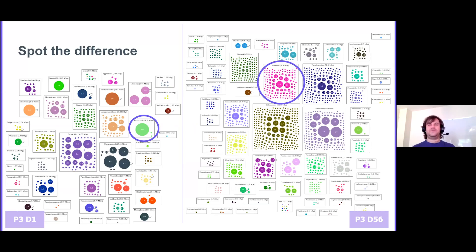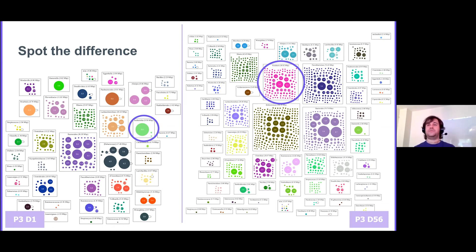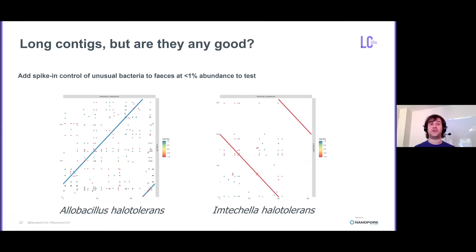Back to the FMT transmissions — we can play a little game of Spot the Difference. I've visualized the communities from patient three before the transplant on the left and patient three at week eight after the transplant on the right. These little boxes represent different genera identified within those communities, and every circle is a contig assigned to that genus. On the left, I've highlighted this E. coli genome that completely disappears between before and after the transplant. On the right, you can see contig blooms of genera that weren't seen before the transplant but are appearing eight weeks after. We got Josh to add a spike-in control of some unusual bacteria we wouldn't expect to see in faeces at less than 1% abundance — and not only can we identify them, we can assemble them whole and they look exactly like the reference.